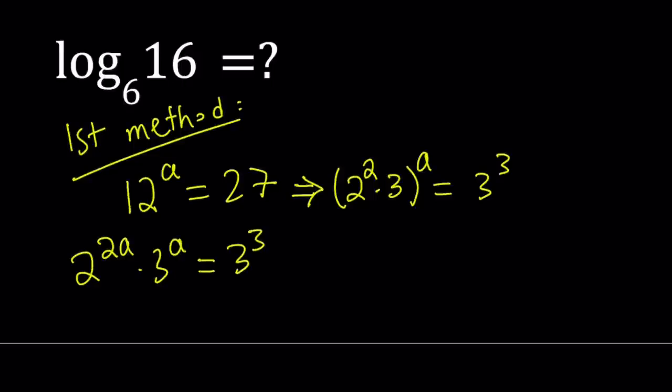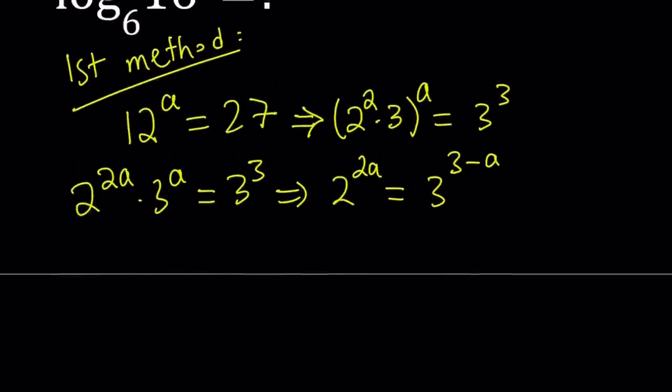Now let's put the powers of 3 together. In other words, divide both sides by 3^A. That's going to give us 2^(2A) equals 3^(3-A), because we're dividing 3³ by 3^A so we subtract exponents. Great. We've got the 2s and 3s on different sides.